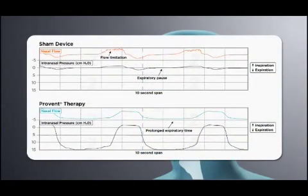These PSG images show a patient with and without ProVent therapy. The top panel shows an untreated patient. There is clear inspiratory flow limitation, intranasal pressure is zero after expiration, and there is a long end-expiratory pause.